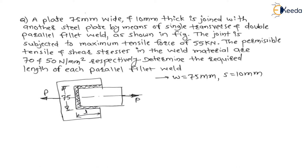There is one transverse fillet weld — this fillet weld is perpendicular to the load, therefore it is a transverse fillet weld. And here these welds are parallel to the force, therefore they are parallel fillet welds. There are two parallel fillet welds of length L each and one transverse fillet weld of length 75 mm.